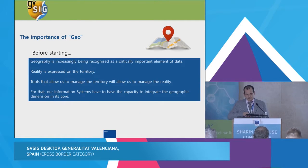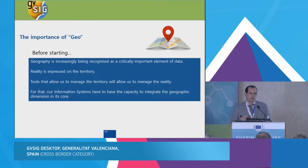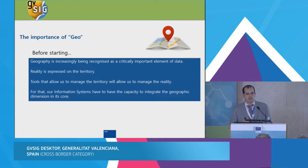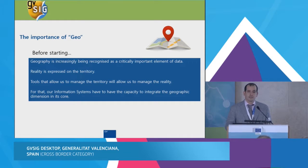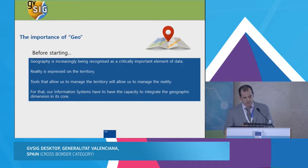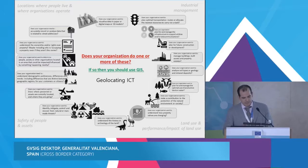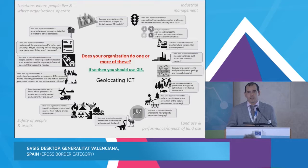I'd like to begin by highlighting the importance of GEO. Where are we? Reality is expressed on the territory. Tools that allow us to manage the territory will allow us to manage reality. Our information system has to have the capacity to integrate the geographic component, the geographic dimension. In this image, we can see how GIS has become a transversal tool.